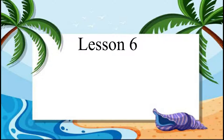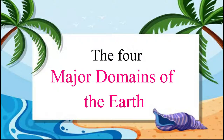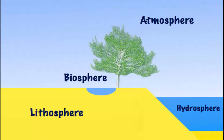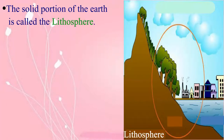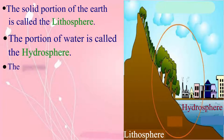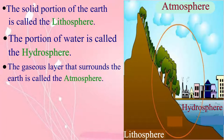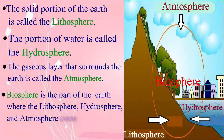Let us go through important points of the lesson: major domains of the earth. The four major domains of the earth are lithosphere, hydrosphere, atmosphere, and biosphere. The solid portion of the earth is called the lithosphere, the portion of water is called the hydrosphere, the gaseous layer that surrounds the earth is called the atmosphere, and the biosphere is the part of the earth where the lithosphere, hydrosphere, and atmosphere come into contact with each other.